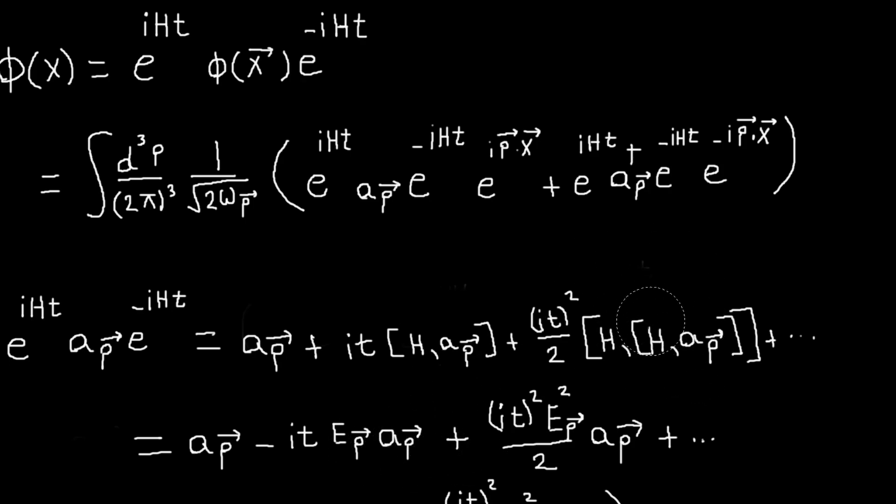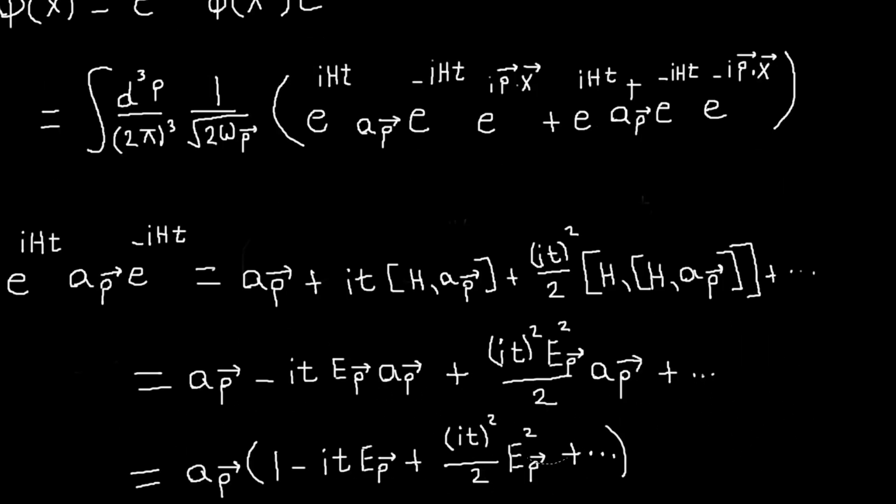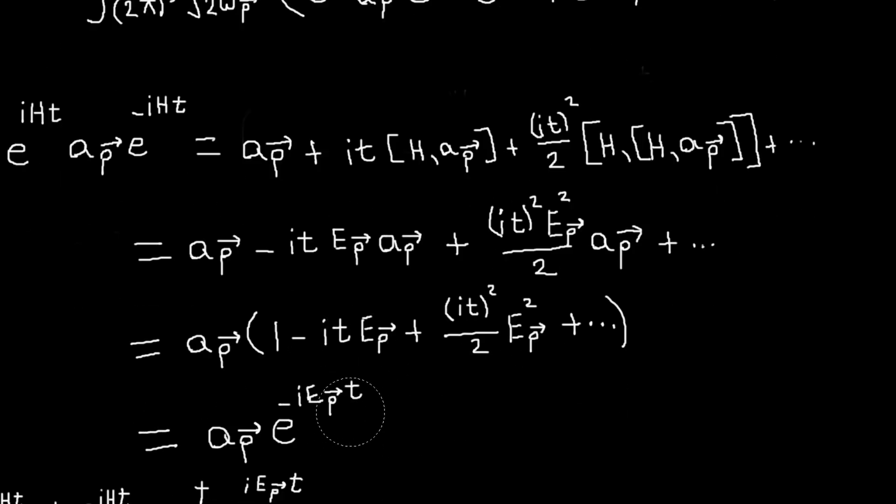And so once you have that, it's easy to work. So this will end up being the commutator of H and EP AP, which I can pull the EP out, so I'll just get another EP AP. So that'll end up with an EP squared AP. You can work it out in more detail if you want, but yeah. So I end up with this, and then in this expression I can factor out an AP. And I'm left with this, which you can read off as this exponential thing.